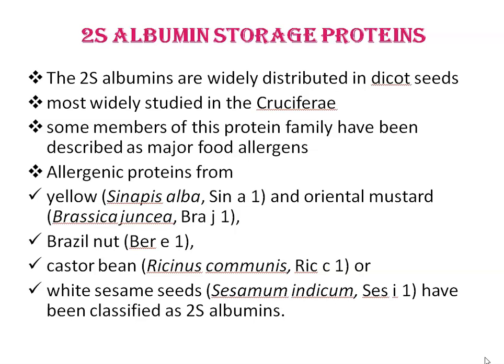2S albumins were initially defined as a group on the basis of their sedimentation coefficient, and are widely distributed in dicot seeds, most widely studied in the Cruciferae family, notably oilseed rape, where they are called napins, and also in Arabidopsis. Allergenic proteins from yellow mustard (Sinapis alba) designated SINA1, oriental mustard (Brassica juncea) BRAJ1, Brazil nut BERE1, castor bean (Ricinus communis) RIC C1, and white sesame (Sesamum indicum) SESI1 have been classified as 2S albumins.